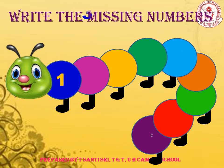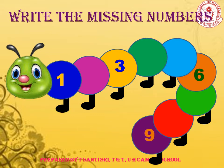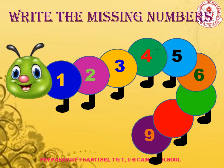Write the missing numbers. Here we have given some numbers and some empty places, so we need to write the missing numbers. We know clearly: after 1 we get 2, after 2 comes 3, after 3 comes 4, after 4 comes 5, after 5 comes 6, after 6 comes 7, after 7 comes 8, after 8 comes 9. So fill the blanks with the numbers.